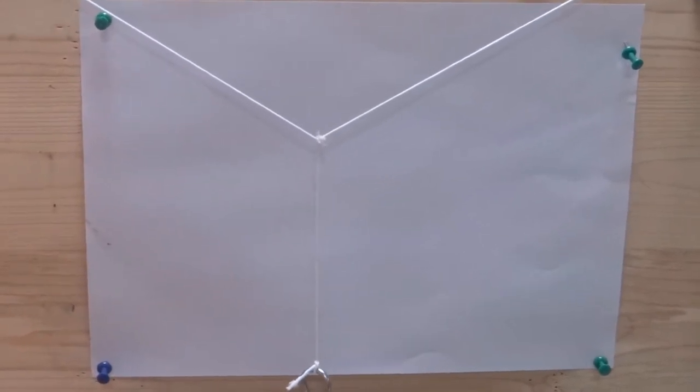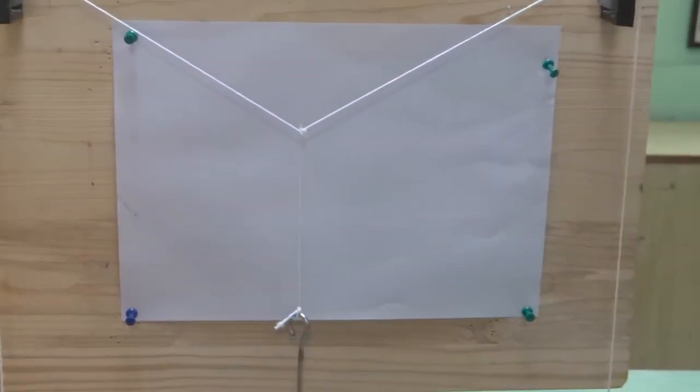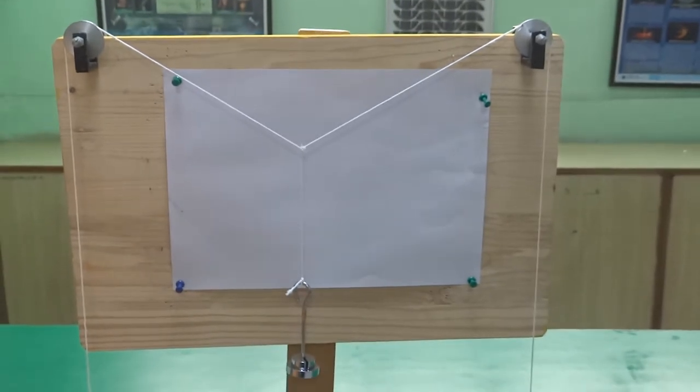If friction in the pulley is little larger, the point might deviate. So now your system is in equilibrium.